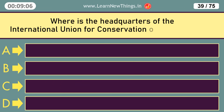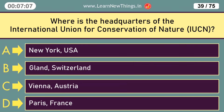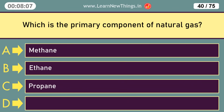Where is the headquarters of the International Union for Conservation of Nature? Gland, Switzerland. Which is the primary component of natural gas? Methane.